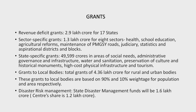The grants to local bodies will be distributed among states based on population and area with 90% and 10% weightage respectively. The Commission has prescribed certain conditions for availing these grants. The entry-level criteria include publishing provisional and audited accounts in the public domain and fixation of minimum floor rates for property taxes by states and improvement in the collection of property taxes. No grants will be released to local bodies of a state after March 2024 if the state does not constitute a State Finance Commission and act upon its recommendations by then.